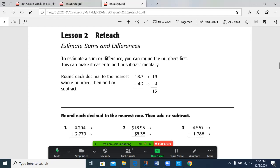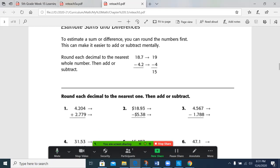So when we do this, we're going to round each decimal to the nearest whole number. So 18.7 to the nearest whole number, and whole number means to the ones place. So this is an 8 with a 7 to the right. That makes this 8 go up by 1 to 9, so we have 19. Minus, and then we have 4 with a 2 to the right. The 4 stays the same. 19 minus 4 is 15.